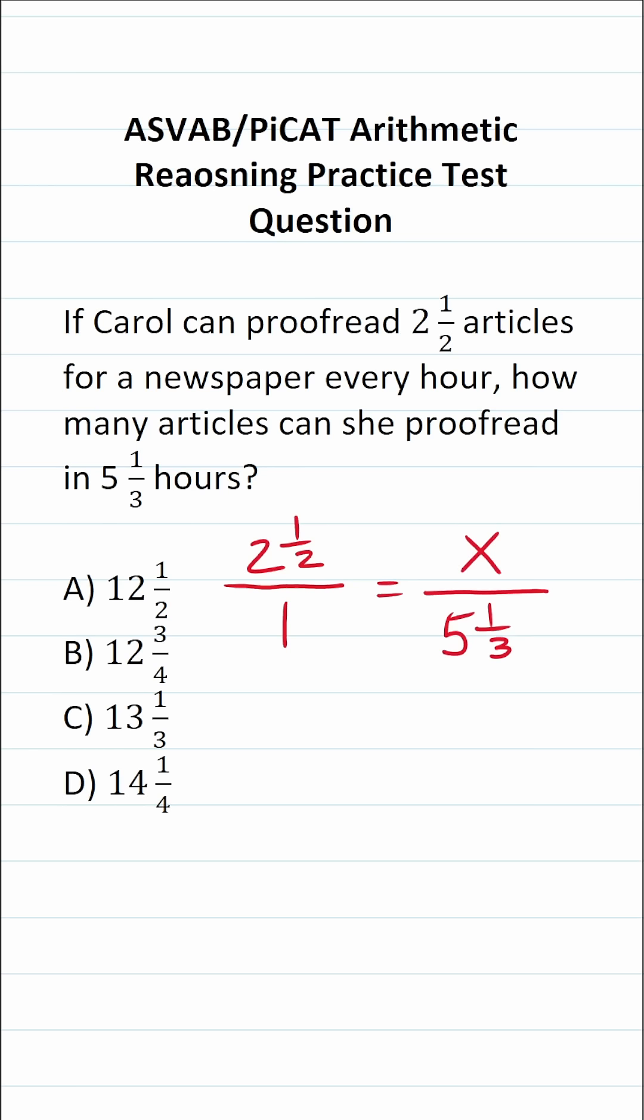All right. So you solve proportions via cross multiplication. To get started, I'm going to do one times X. One times X is just X equals two and a half times five and one third.